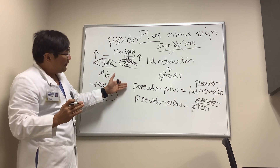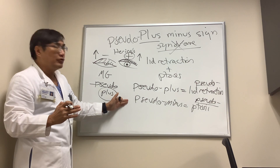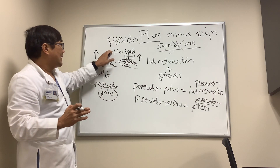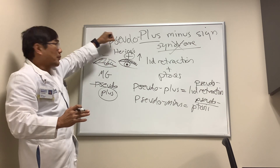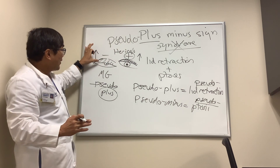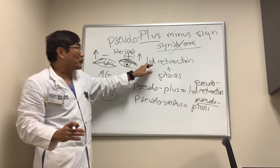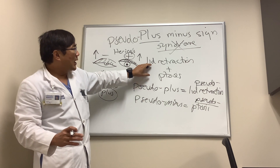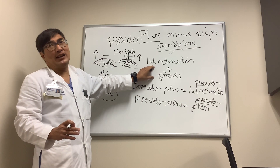So we can have pseudo plus — pseudo lid retraction — and pseudo minus — pseudoptosis. We can test that by testing Hering's law: by lifting up the ptotic lid or pushing down the retracted lid. If, however, we lift up the ptotic lid and it stays retracted, that is a true lid retraction and a true ptosis, and the most common cause of that is myasthenia gravis and thyroid eye disease.